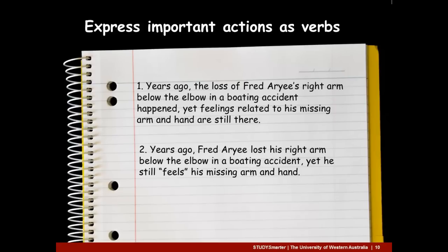Another way to improve sentences is to express important actions as verbs. Compare these two sentences — which do you prefer and why? Most people prefer the second sentence. It seems clearer and has more impact because it expresses important actions as vivid descriptive verbs: 'lost' and 'feels'. They like the first sentence less because it buries important actions in nouns: 'loss' and 'feelings'.